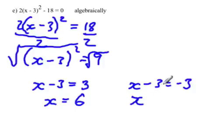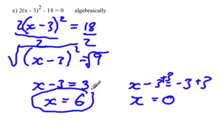And x minus 3, we're going to add 3 to both sides. So this is equal to 0. So our two possible answers are x equals 6 or x equals 0.